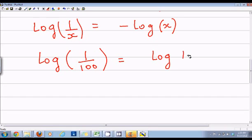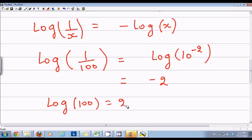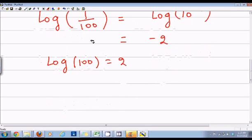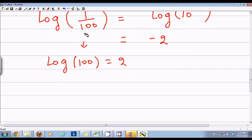And what is log of 100? Log of 100 is equal to 2. So the difference between log of 1 by 100 and 100 was just the negative sign. So this is the third property of logarithms.